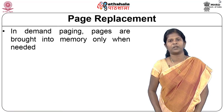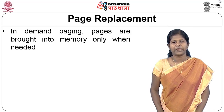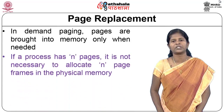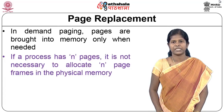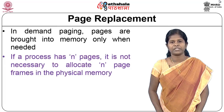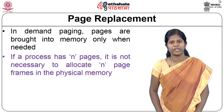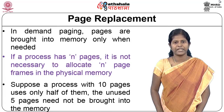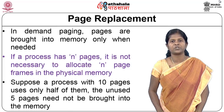In the previous module, we learnt what is meant by demand paging. In demand paging, pages are brought into memory only when they are needed. A particular process can have many pages, but all the pages need not be present in memory at the same time. It is not necessary to allocate n page frames for a process with n pages — only a few page frames need to be allocated.